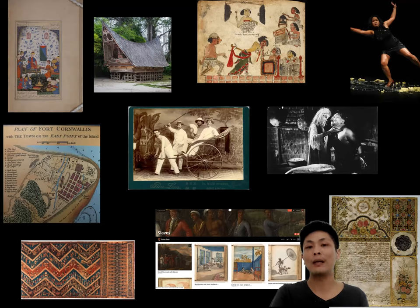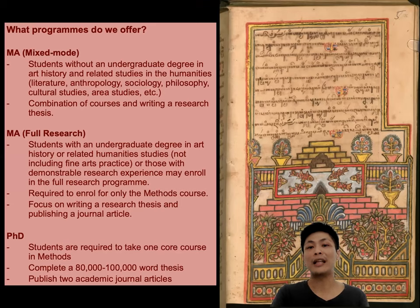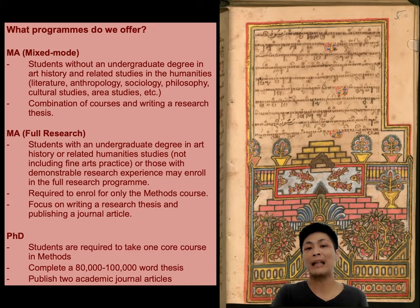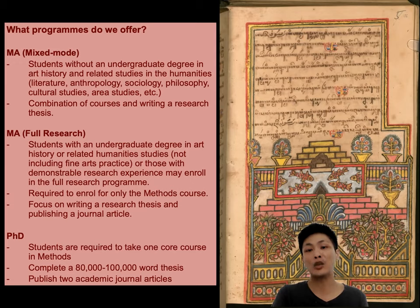We generally have three programs on offer. For students without an undergraduate degree in art history or related studies in the humanities, our mixed mode program is a combination of courses where students are taught the skills to undertake humanities research, leading to the writing of a research thesis on a topic of interest. For those with an undergraduate background in art history or related humanities training, or those with demonstrable research experience, you might be interested to enroll in our full research master's program. Please note that those with a fine arts undergraduate degree are generally not considered as having the necessary foundational humanities research, reading, and writing skills. Therefore, we often recommend fine arts graduates to take on our mixed mode program.